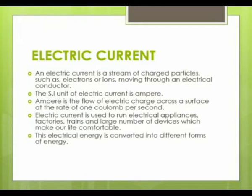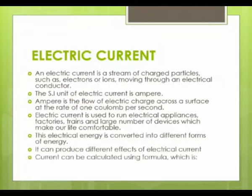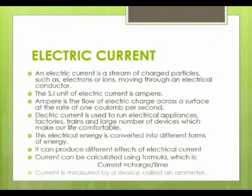This electrical energy is converted into different forms of energy. For example, in speakers, electrical energy is changed into sound energy; in tube lights, electrical energy is changed into light energy. Electric current can produce different effects. Current can be calculated using the formula: current is equal to charge upon time. Current is measured by a device called an ammeter.